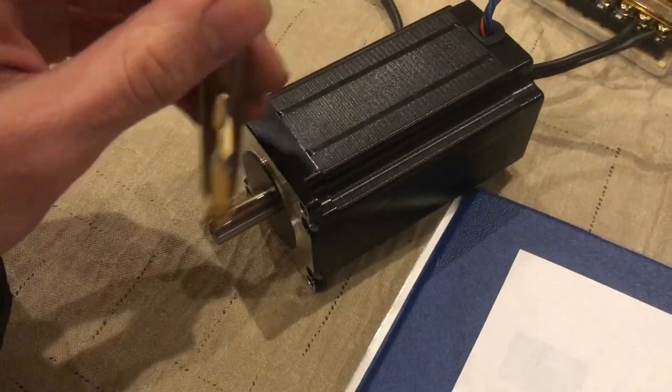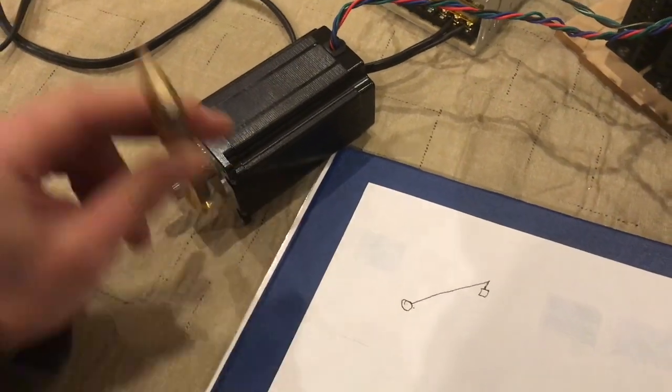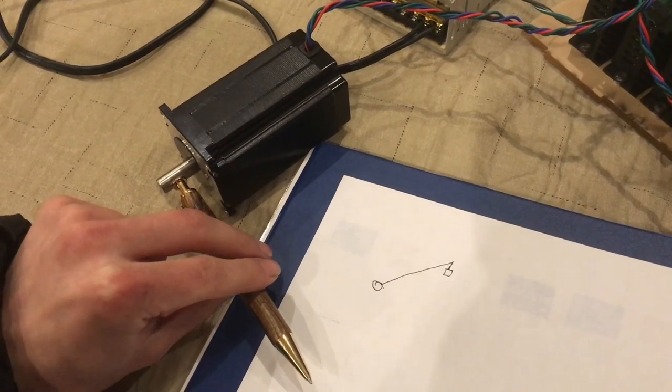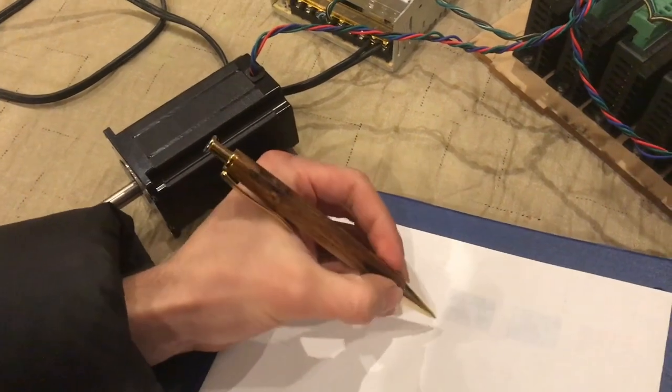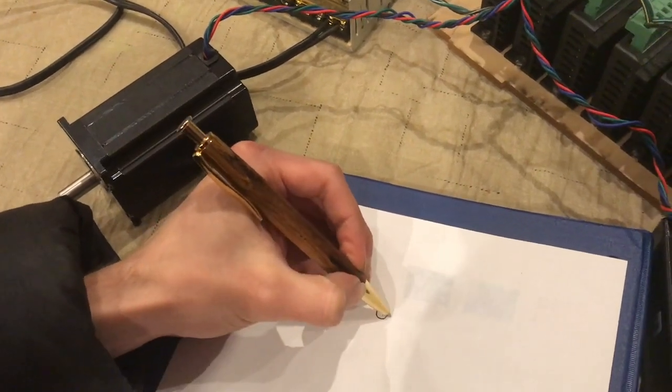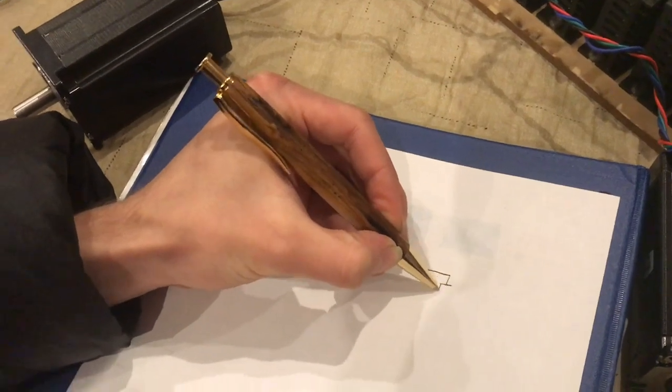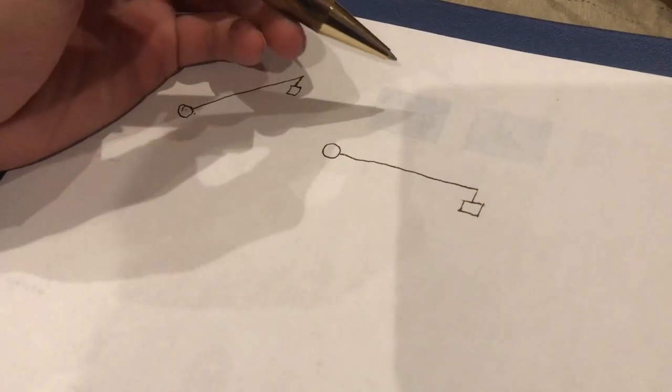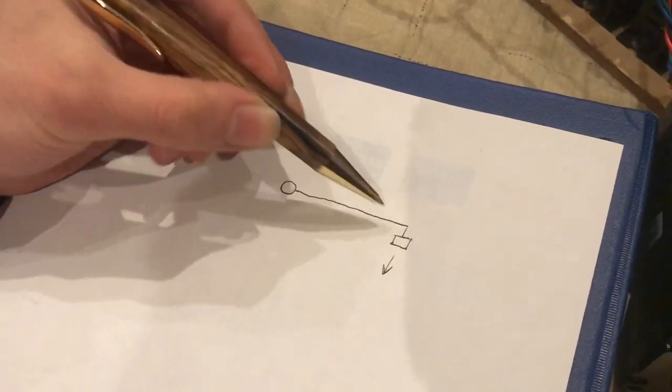However, whenever the arm is completely horizontal, then all of the downforce is going to be causing a torque on the motor. So let's redraw it with the arm coming straight out and the payload hanging perpendicular.